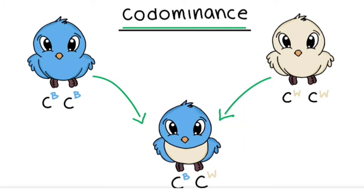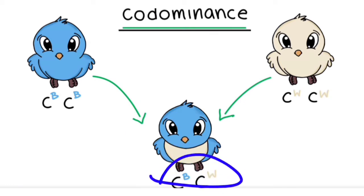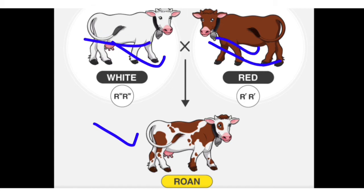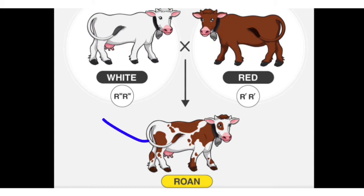In co-dominance, the new individual has both blue and white. The condition is heterozygous, but the two characters are equally expressed. For example, consider a white cow and a red cow. In the heterozygous F1 generation, both characters are equally expressed — both colors appear separately in F1 generation. This is an example of co-dominance.